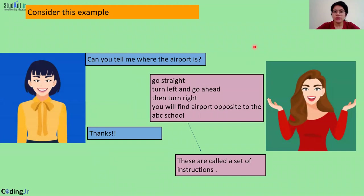If I ask someone to tell me about the path to the airport, they will give me some instructions — like go straight, go left, go right — and then you will reach the airport. So these are a set of instructions: go straight, turn left, go ahead.